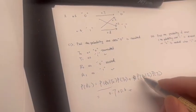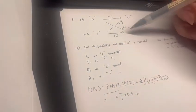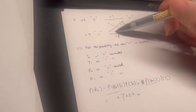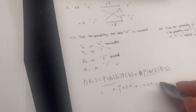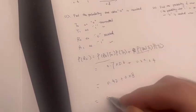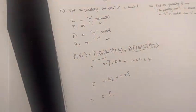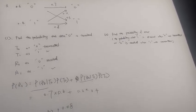Plus the probability that zero is received given one is transmitted, which is 0.2, times the probability that one is transmitted, which is 0.4. So the result is 0.42 plus 0.08, which equals 0.50. Sorry — the result is 0.55.